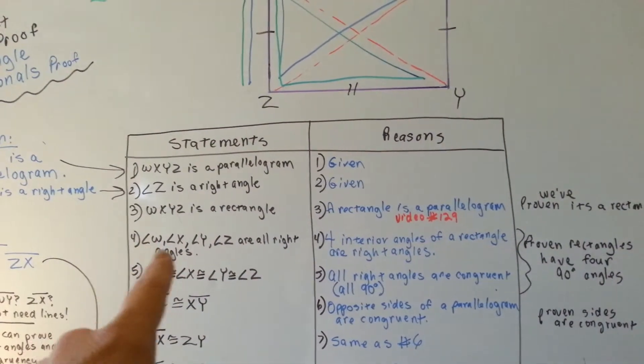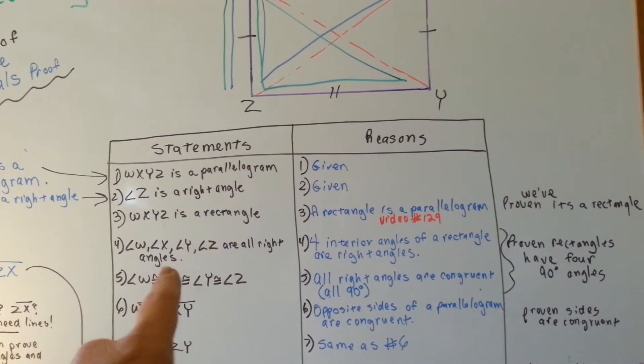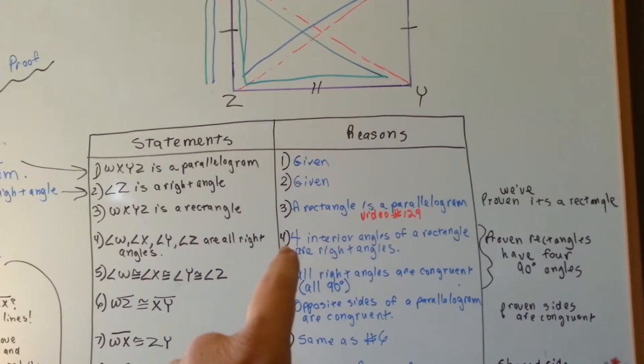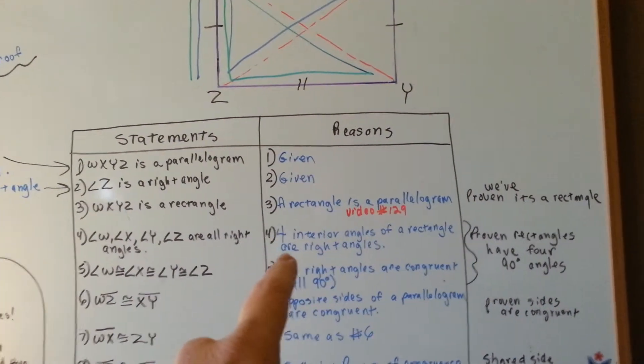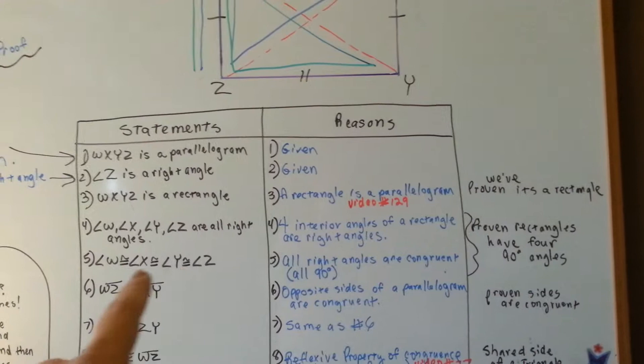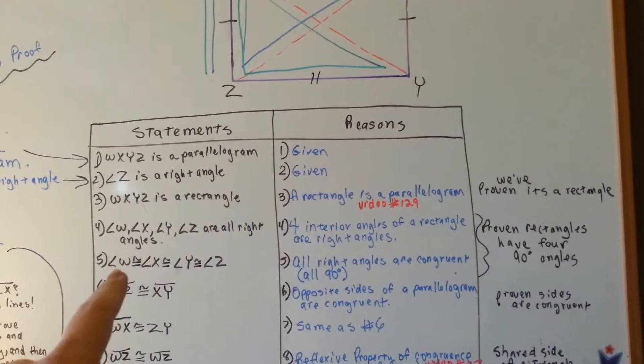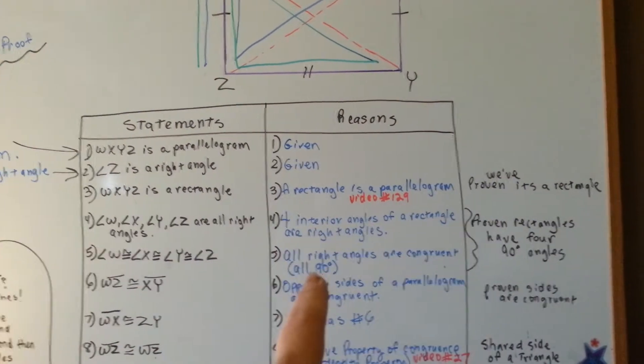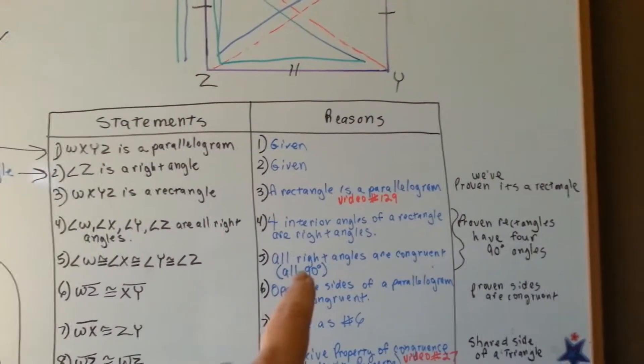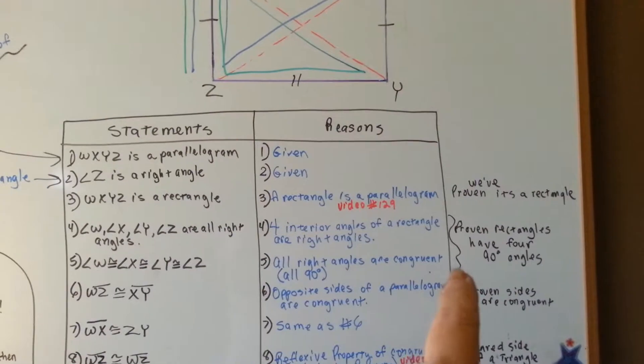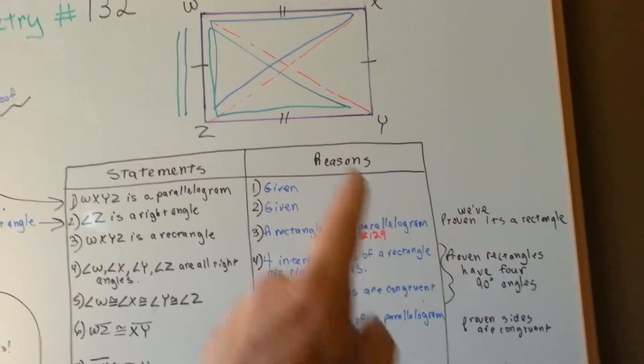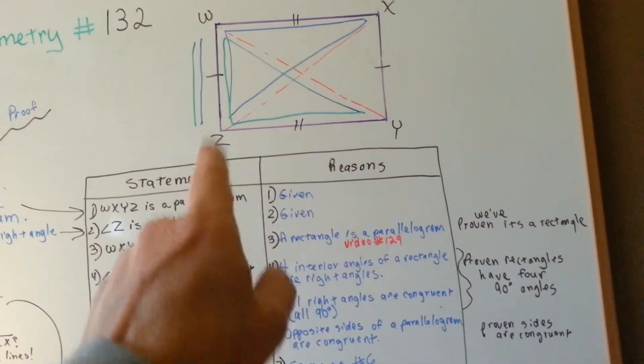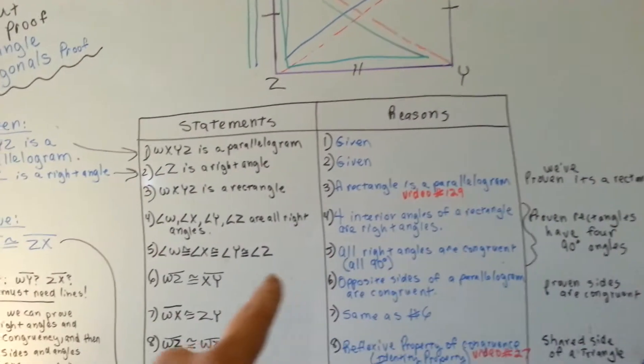So, we say that angles W, X, Y, and Z are all right angles, because of the fact that four interior angles of a rectangle are right angles. And that angle W is congruent to X, which is congruent to Y, which is congruent to Z, because all right angles are congruent. They're all 90 degrees. So, now we've proven that it's a rectangle, and it's got four 90 degree angles.